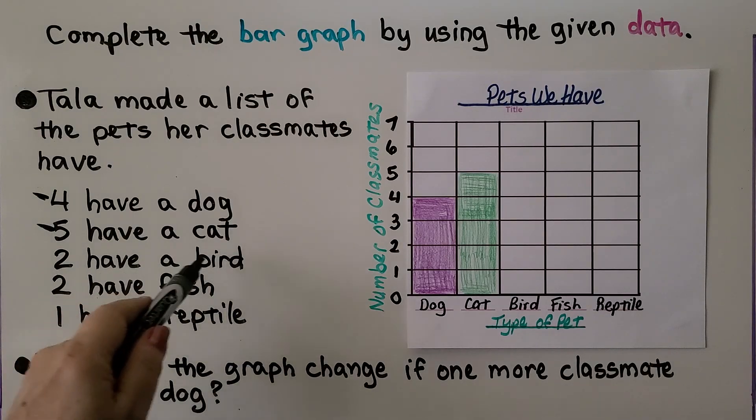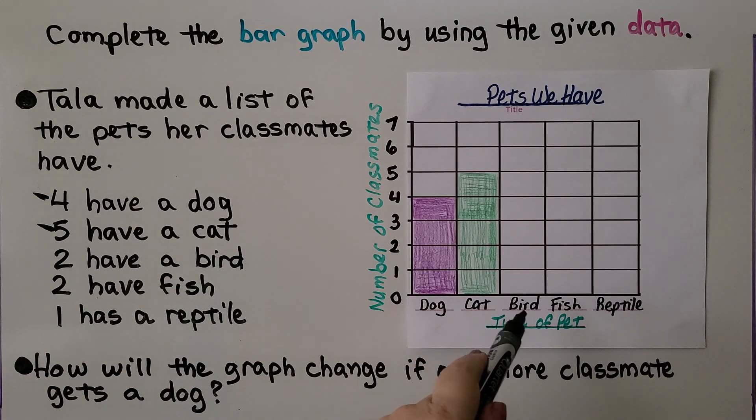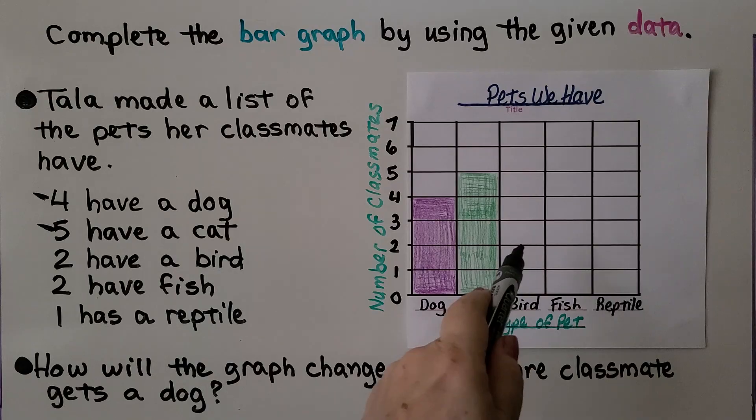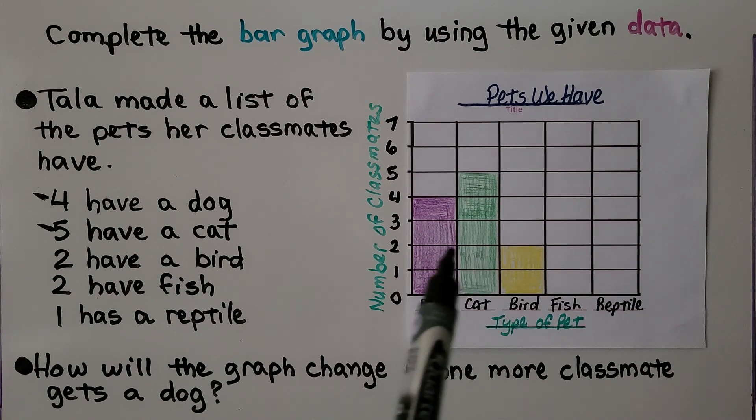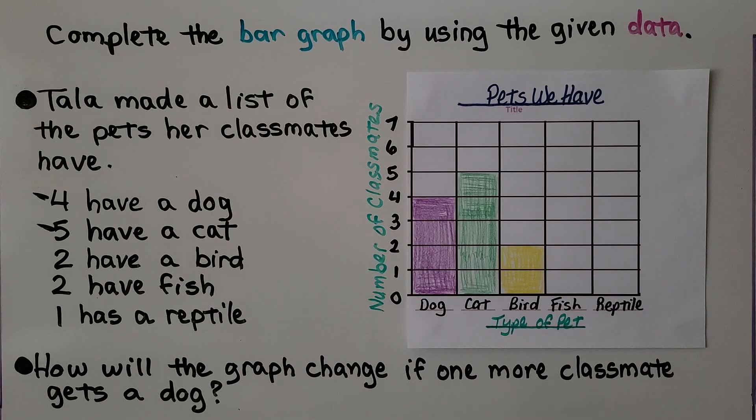Now we need to have a bird. We look at the bird column and we're going to color our bar up to the number two on the scale. I chose yellow and I colored it in up to the two on the scale.